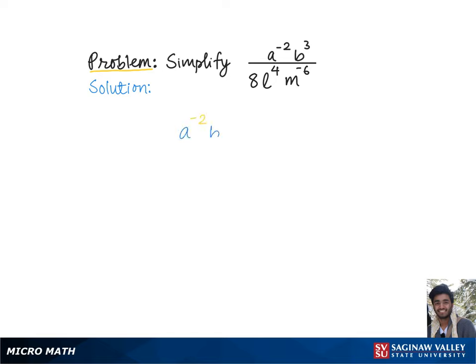To simplify a to the negative 2 times b cubed divided by 8 times l to the 4th times m to the negative 6, let's go over the rule of negative exponents, which says that to change negative exponents into positive, we just need to move them from numerator to denominator or from denominator to numerator.